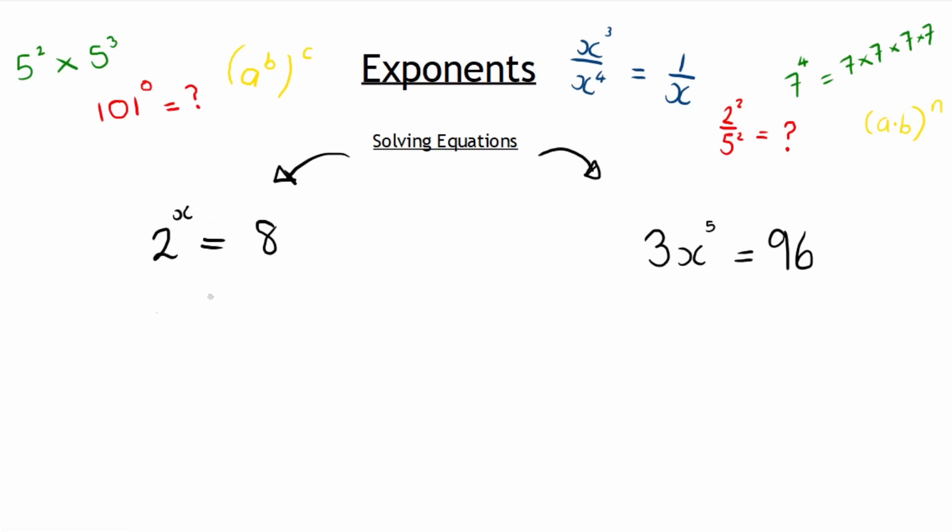And so 2 to the power of x cannot be changed as that is already a prime number, but how can I rewrite the number 8 as a base of 2? And some of you might already be one step ahead of me knowing that 2 to the power of 3 is equal to 8. And so now I have an equation where 2 to the power of x is equals to 2 to the power of 3.